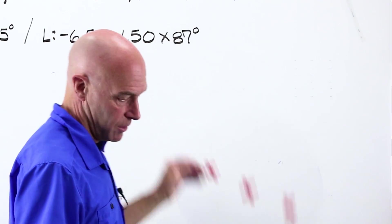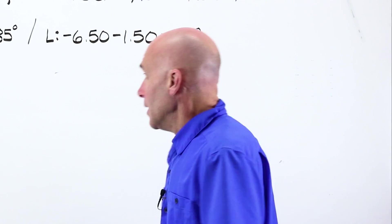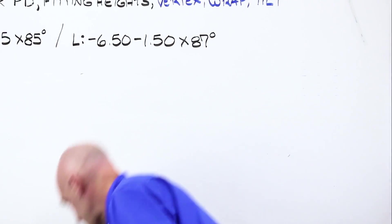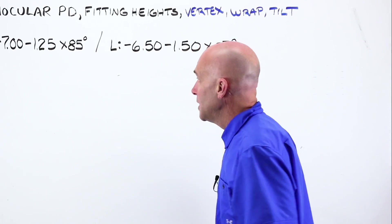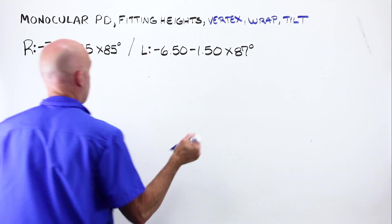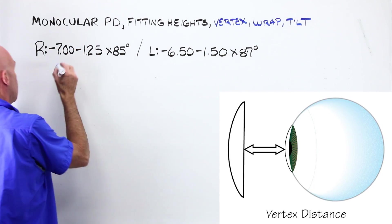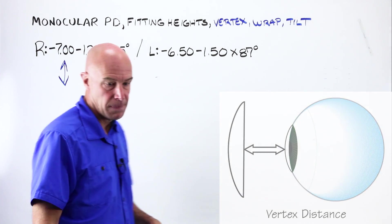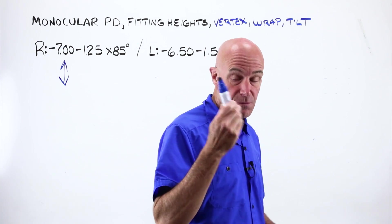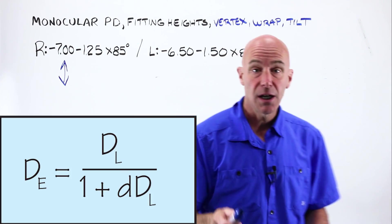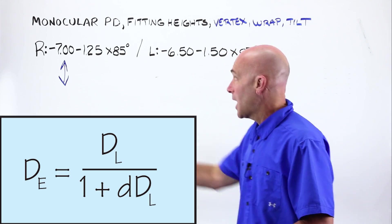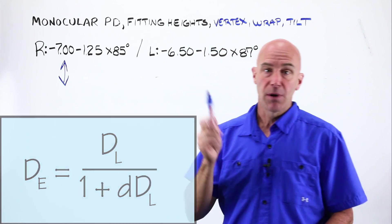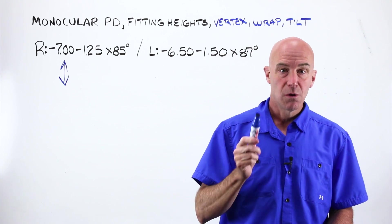I can calculate those. If I take these numbers right here and I account for my vertex depth, this may go up or down. The closer or the further away that lens, depending on its plus or if it's minus and how much power it is, my brain will see it as being weaker or stronger.